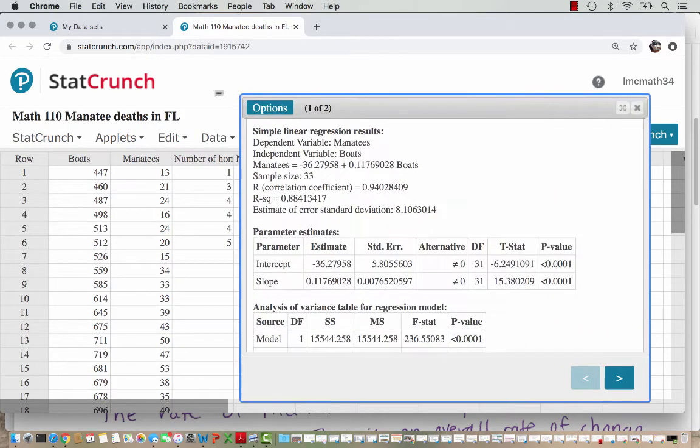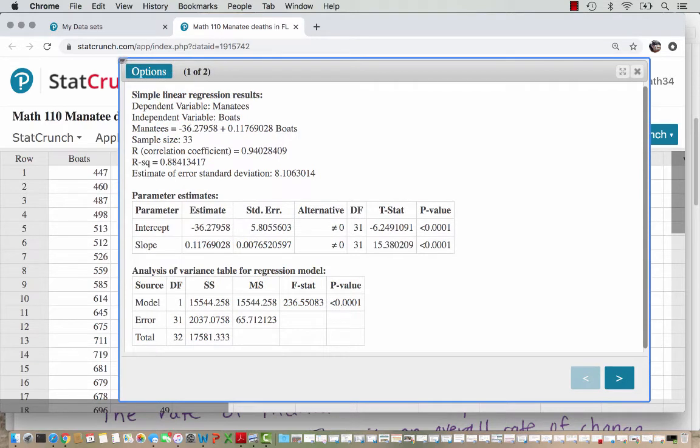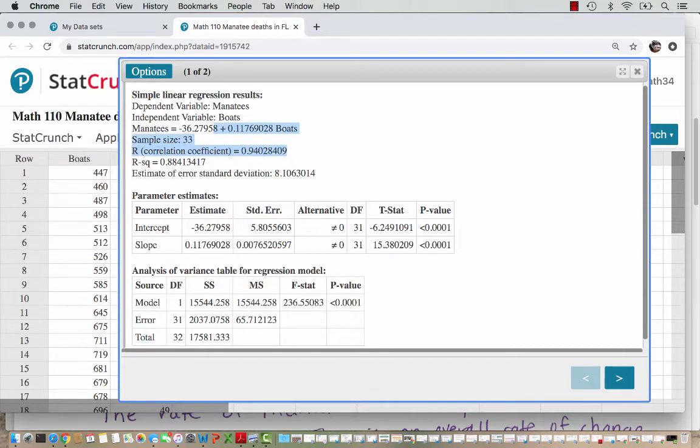The first screen gives me a lot of information. We aren't going to use parameter estimates or analysis of variance estimates in this part of the class. We are interested in the top values here. The dependent variable is also known as a y variable because the y output depends on what we selected for the x input. And so that's the manatees. The independent variable or the x variable is the boats or the number of boats. And then our equation is here.